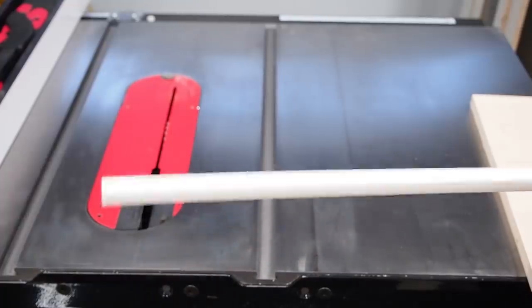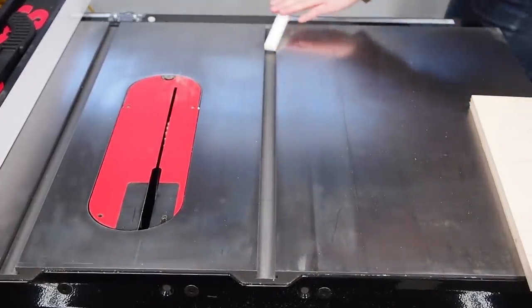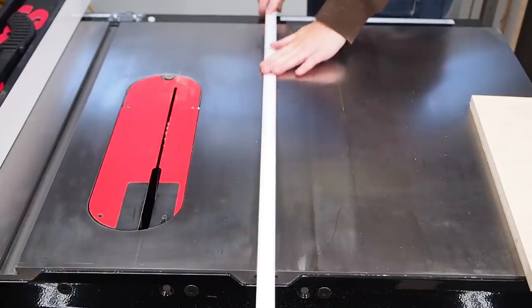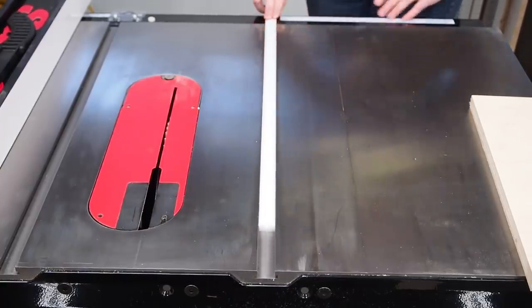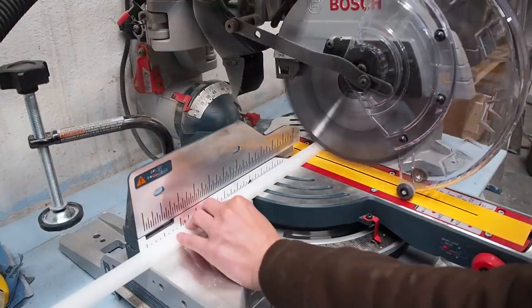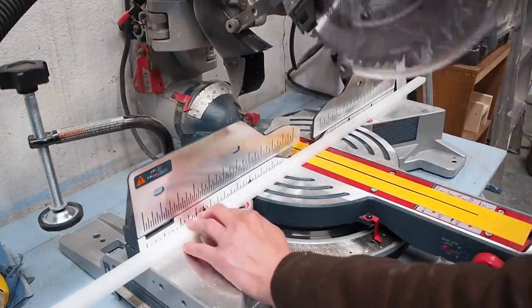I'm using this polyethylene runner but you could alternatively make your own runners out of hardwood. I like the idea of these plastic runners since they're a perfect fit, slide smoothly, and won't be affected by fluctuations in temperature or humidity which can cause wood runners to swell or shrink.